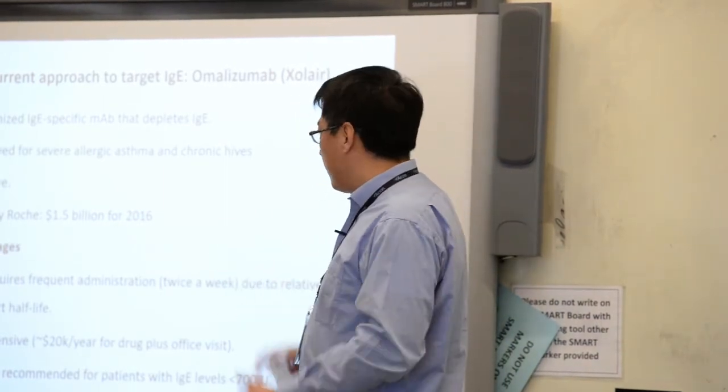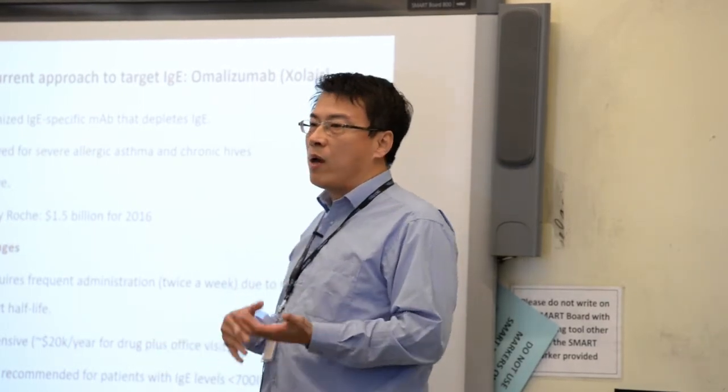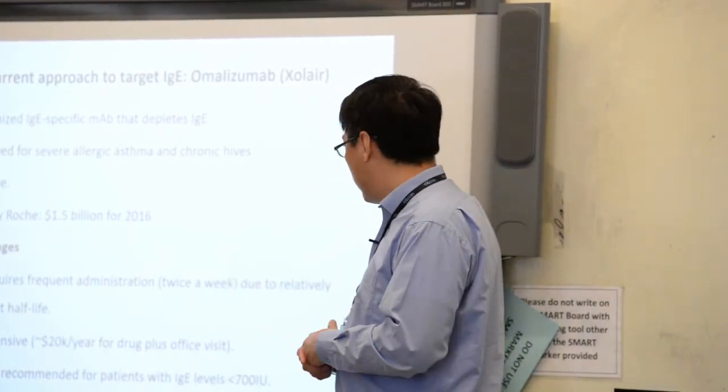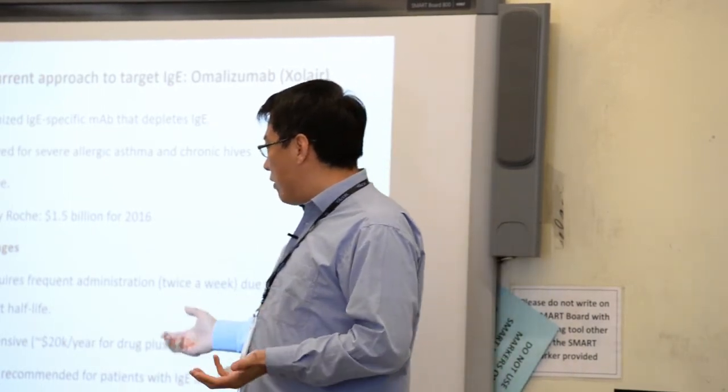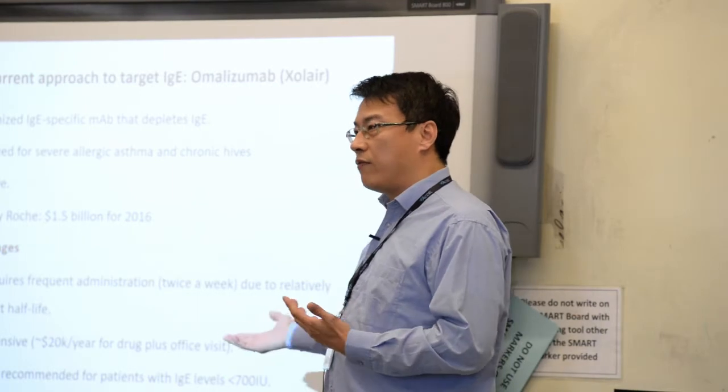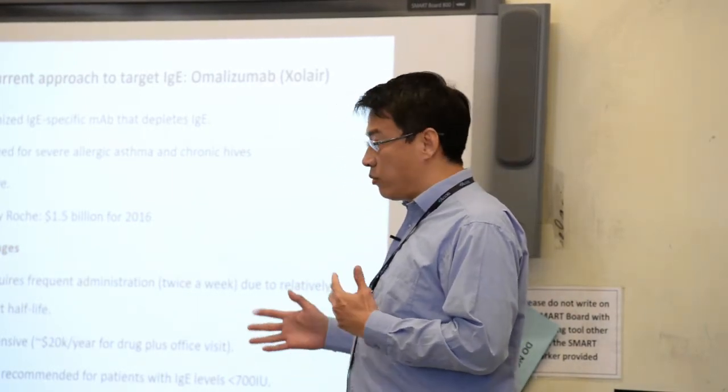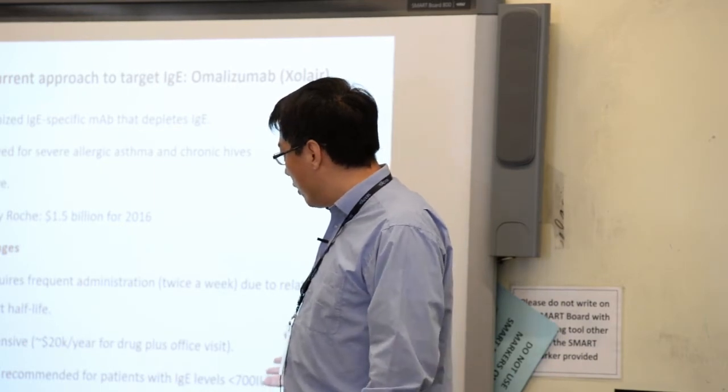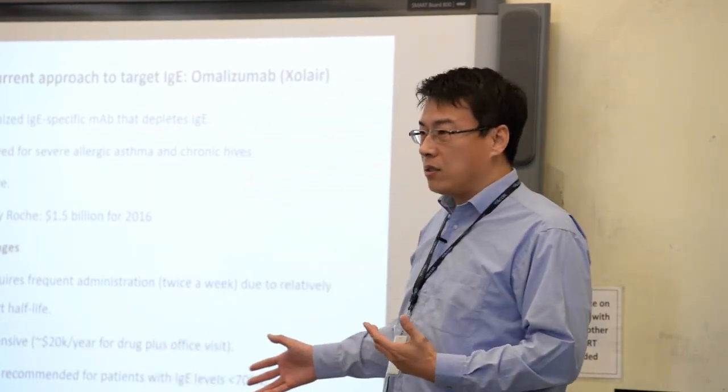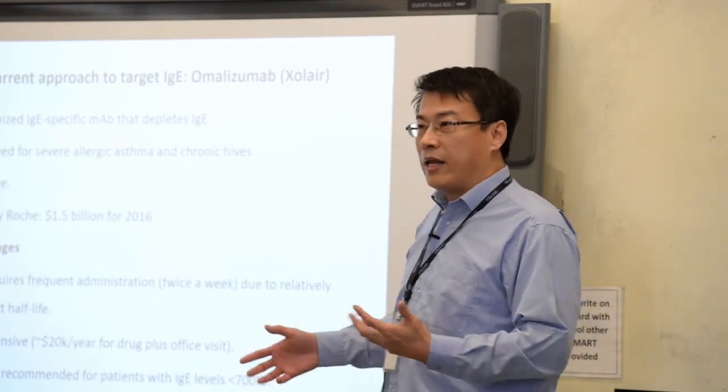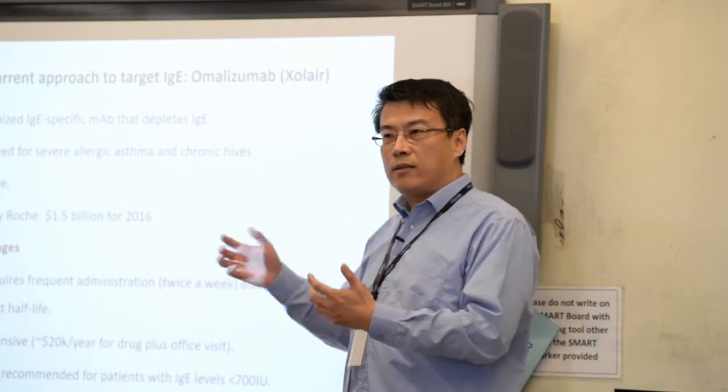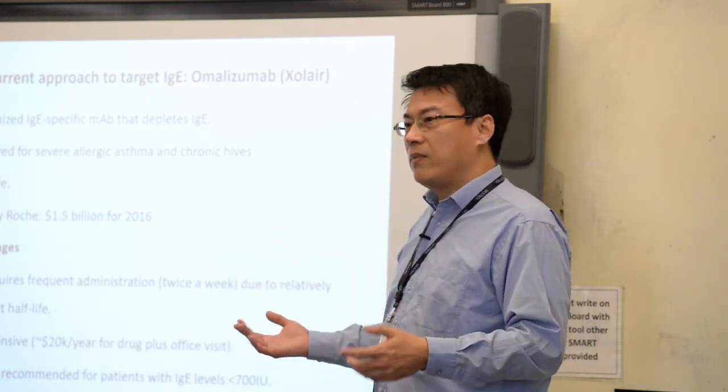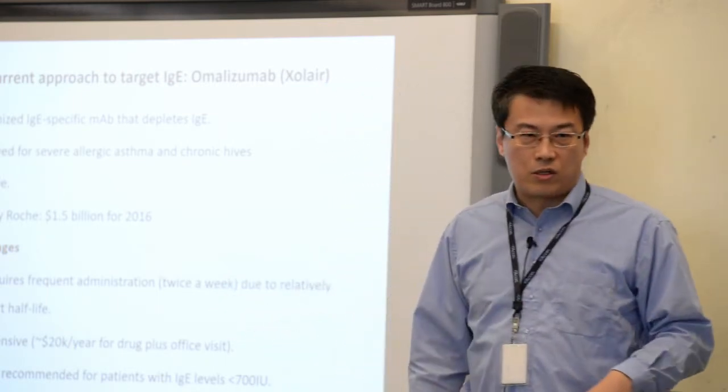But it does have disadvantages. Being an antibody, it has a half-life around one week in your body, so it requires pretty frequent administration, twice a month. It's expensive, about $20,000 a year for the drug alone, plus you have to visit the doctors. It's only recommended for patients with relatively low level of IgE, lower than 700 units per ml. Also has a risk of developing systemic anaphylaxis. It is humanized, but it's still a protein from a foreign source and can potentially trigger severe allergic responses. The irony is it's supposed to treat allergy, but it can trigger allergic responses.